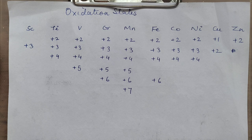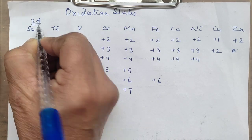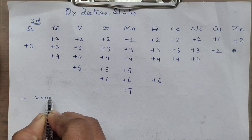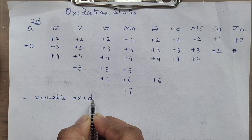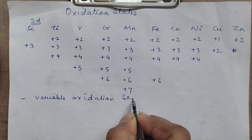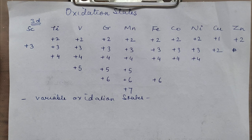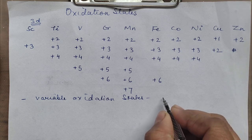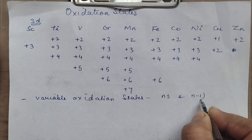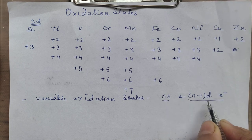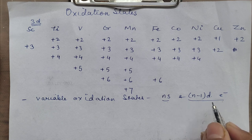This particular series written here is the 3D series. The first very important point about D block elements is that they exhibit variable oxidation states. They exhibit variable oxidation states — of course P block elements also exhibit variable oxidation states, but the number of oxidation states exhibited by D block is even more. So why do they exhibit variable oxidation states? The answer is the participation of Ns and N-1D electrons — both are participating, from the ultimate and penultimate shells.